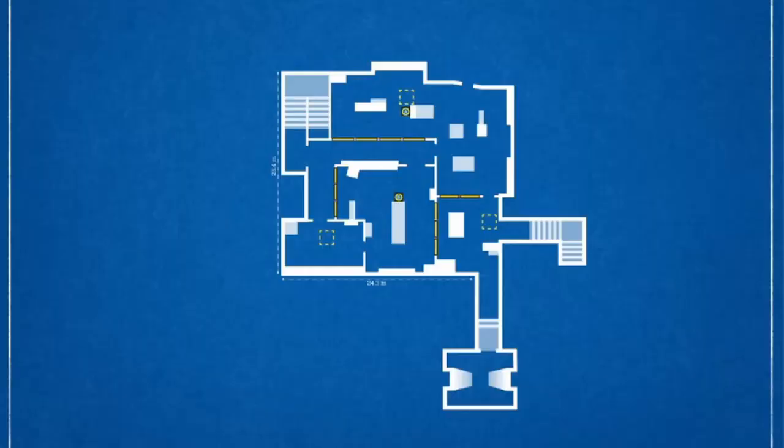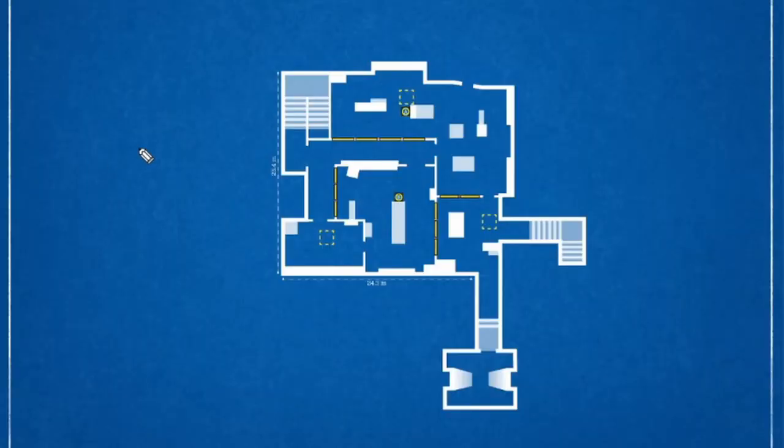Let's jump over to the map view now. In order to talk about Café basement, we need to talk about Clubhouse basement and what makes this site kind of difficult to defend. In a lot of cases, it's known in the competitive community that if you aren't able to defend the kitchen hatch from being opened, then you've probably lost the round.